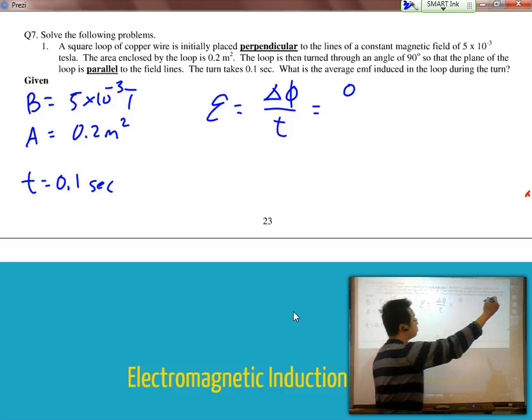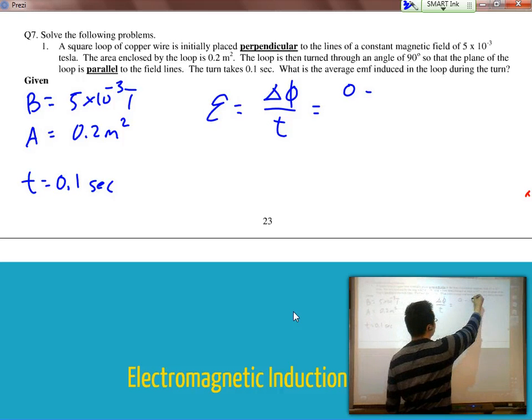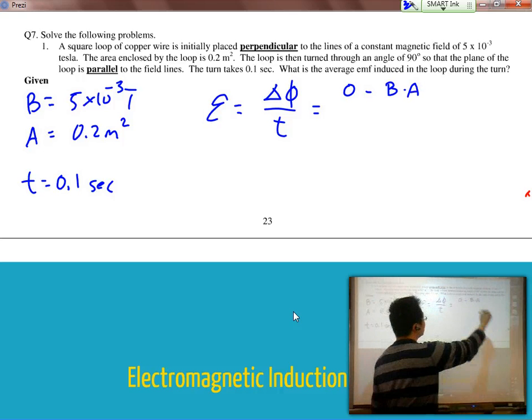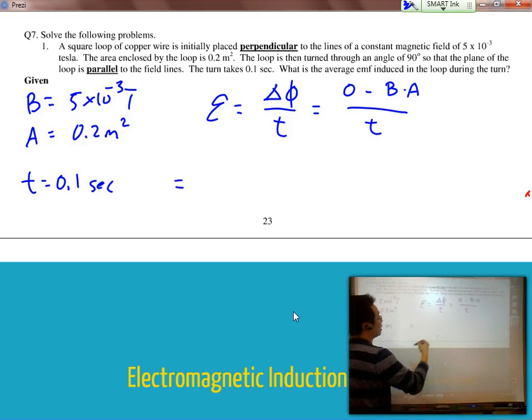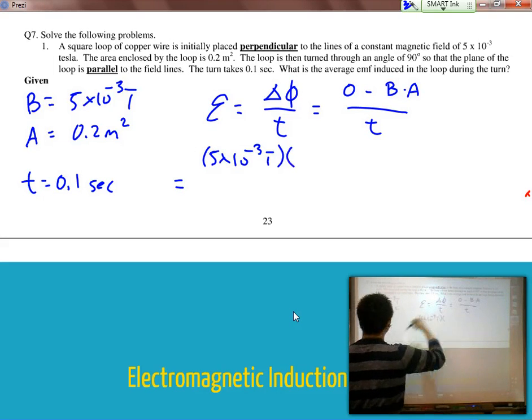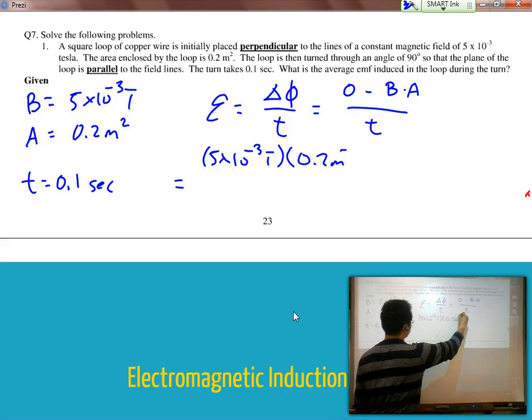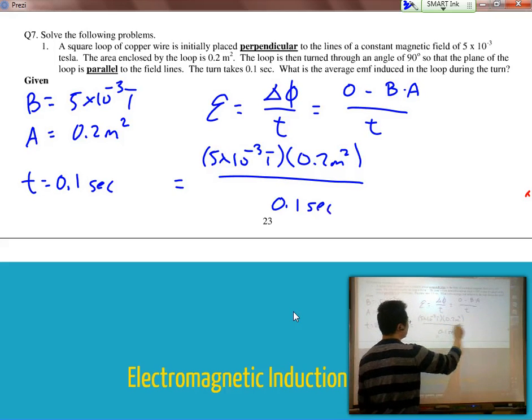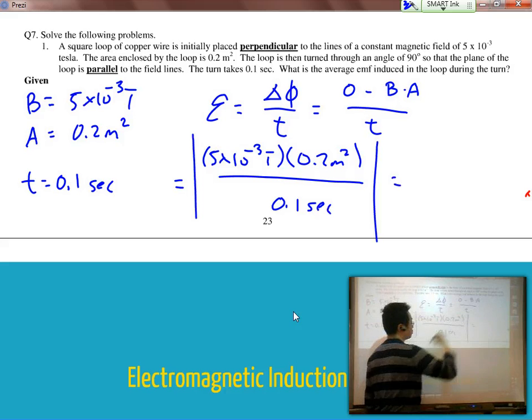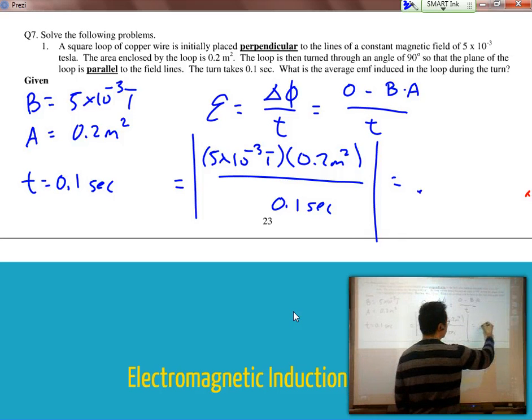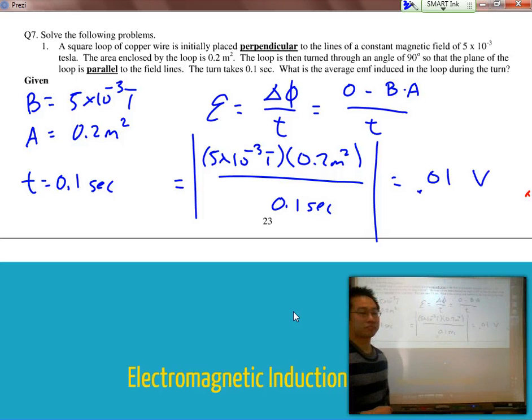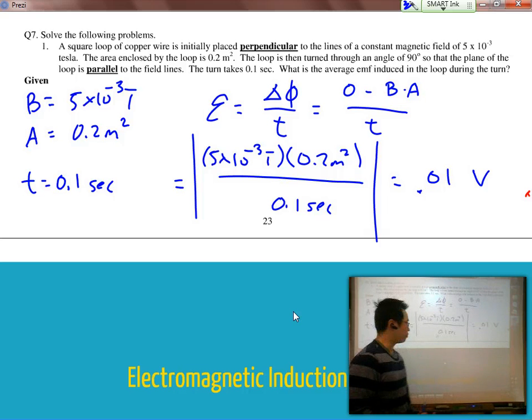So the final flux, of course, is 0. But the initial flux is simply B times A divided by T. So if I plug in all my numbers here, I end up with 5 times 10 to the negative third Tesla times 0.2 meters squared divided by 0.1 seconds. I keep this whole thing absolute for the most part. I end up with 0.1 volts. So it's very straightforward to use.